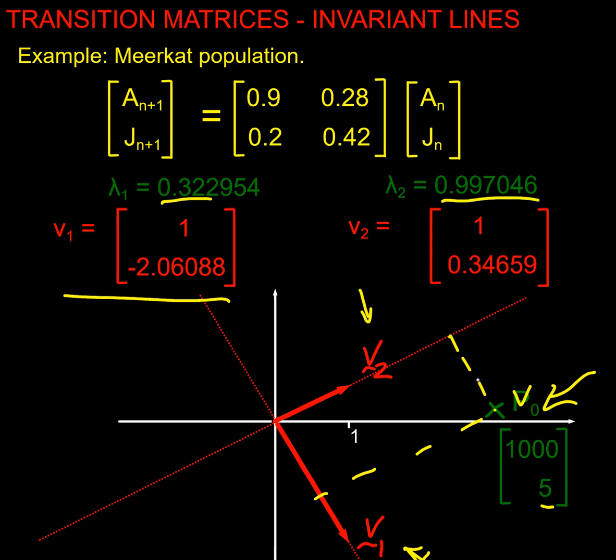What happens over the first year to the v_2 component? It gets multiplied by this number so it basically doesn't change. What happens to my v_1 component? It gets multiplied by 0.3, so it becomes 0.3 of whatever it started as. In year two, the v_2 component is unchanged really but the v_1 gets multiplied by 0.3 again. By the end of it, v_{10} is basically here. So what's happened is wherever I started, it's going to head towards the invariant line there.